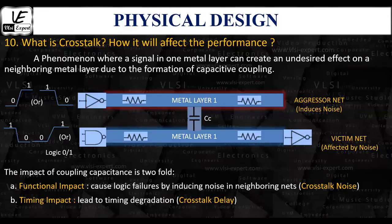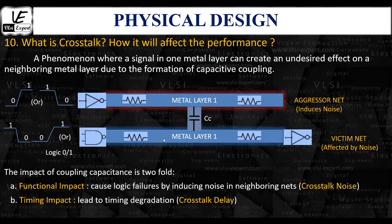Here is the next question: What is crosstalk and how will it affect the performance of an IC design? Crosstalk in an IC design is a phenomenon that occurs due to the formation of coupling capacitance between two adjacent wires or metal layers, where the signal transmitted on one metal layer has a significant impact on the signal transmitted on the adjacent metal layer.